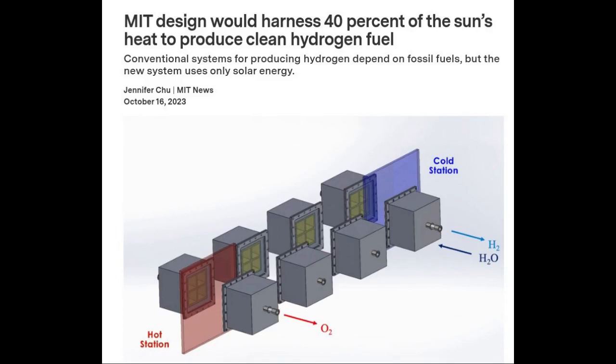MIT engineers aim to produce totally green, carbon-free hydrogen fuel with a new train-like system of reactors that is driven solely by the sun.